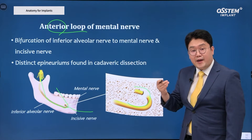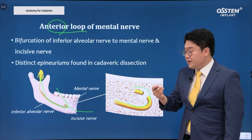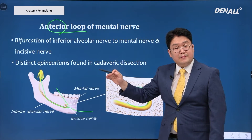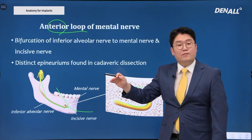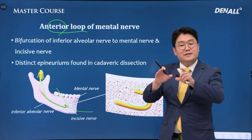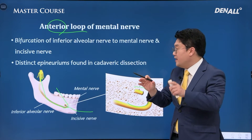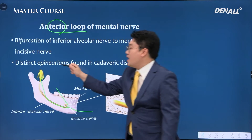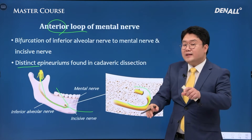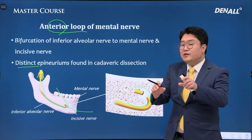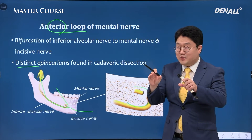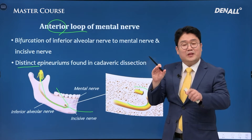If you do a dissection on a cadaver, there are distinct epineuriums found in the incisive nerve and mental nerve, which makes it easier to define the length of the anterior loop.